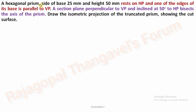Read the question: hexagonal prism, side of base 25 mm and height 50 mm, rests on HP and one of the edges of its base is parallel to VP. A section plane perpendicular to VP and inclined at 50 degrees to HP bisects the axis of the prism. Draw the isometric projection of the truncated prism showing the cut surface. The position of the solid is clearly given — the solid is resting on HP such that one of the edges of its base is parallel to VP.